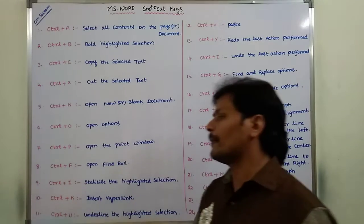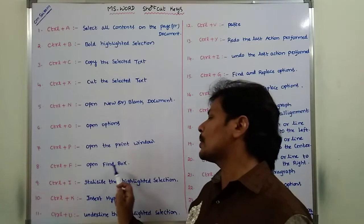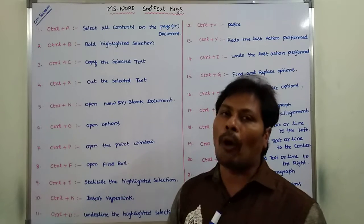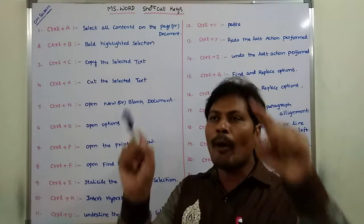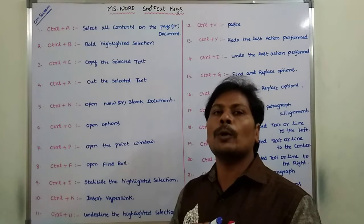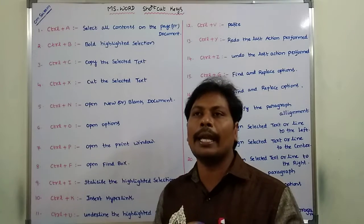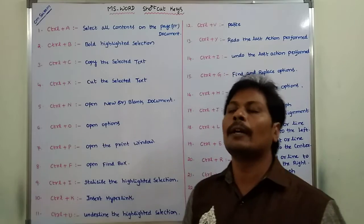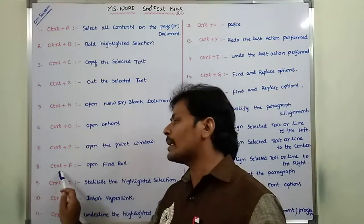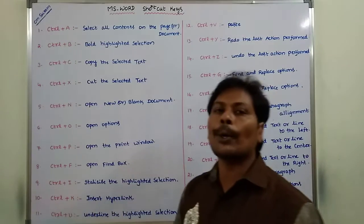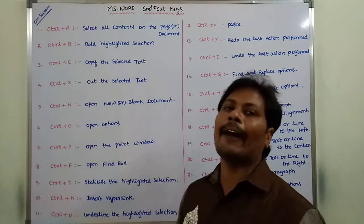Next is Ctrl plus F. This command or key is used to open the find box. Suppose you want to search for a particular word in a page or document — for that purpose, we use Ctrl plus F, which opens the find box.